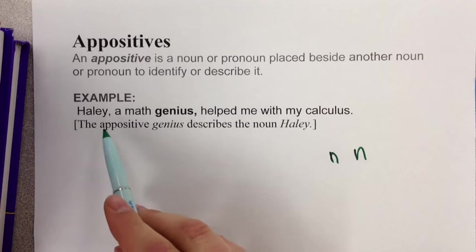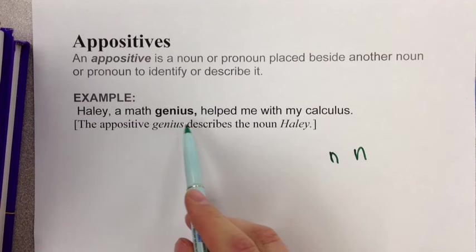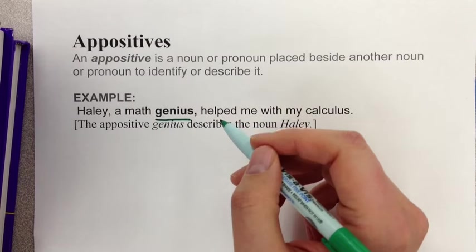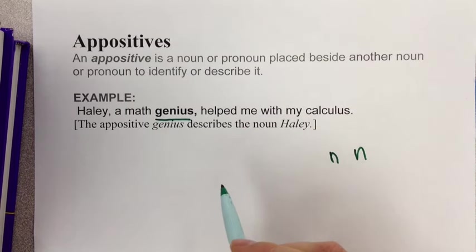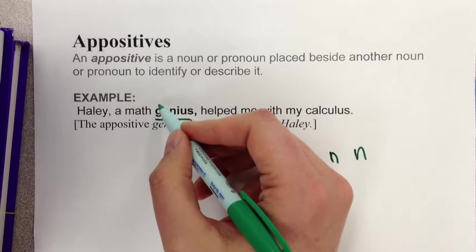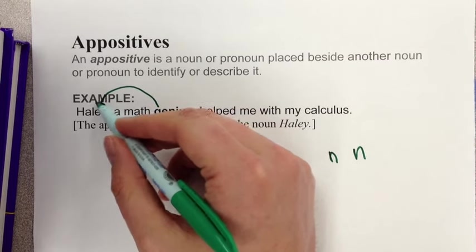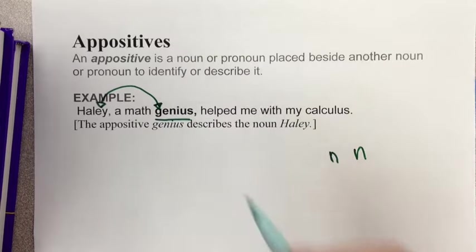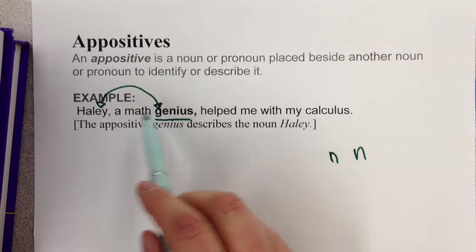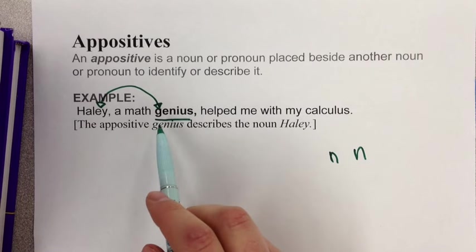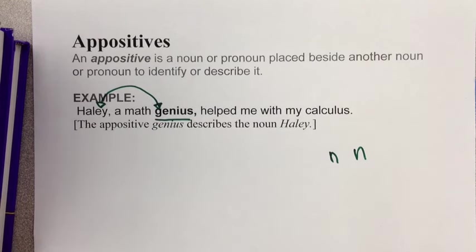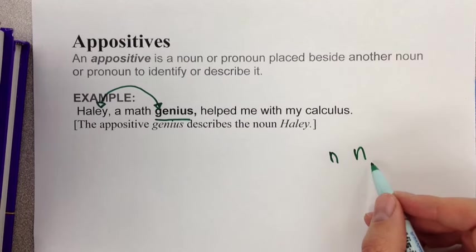Let's look at this example: 'Haley, a math genius, helped me with my calculus.' Right here, 'a math genius' is the appositive phrase, because 'a math genius' and 'Haley' are the same person. This noun's purpose is to identify or describe Haley. So we have a noun-and-noun relationship.